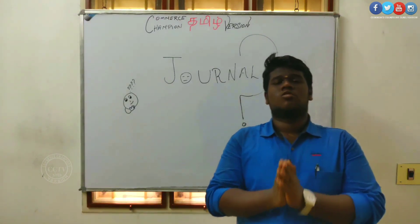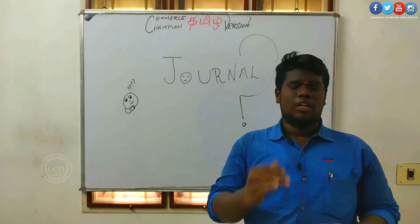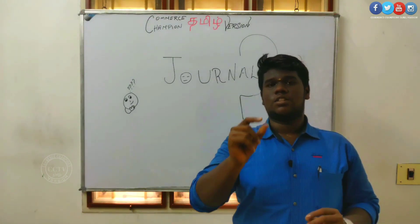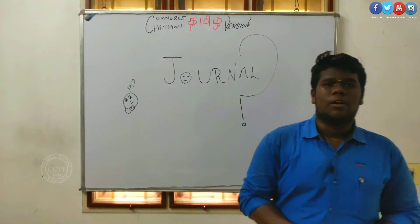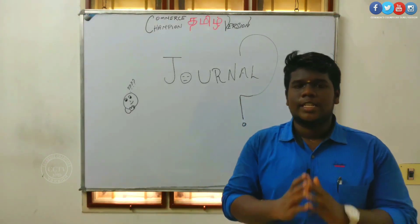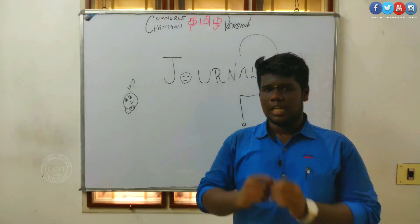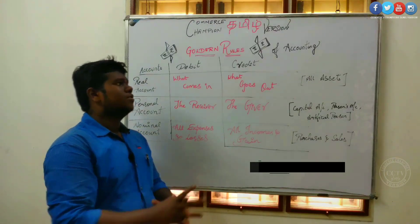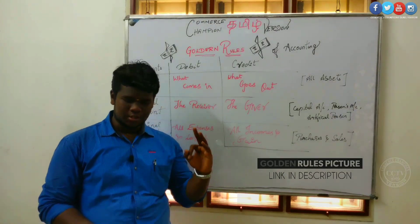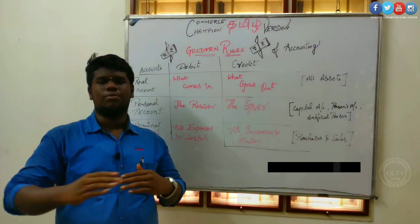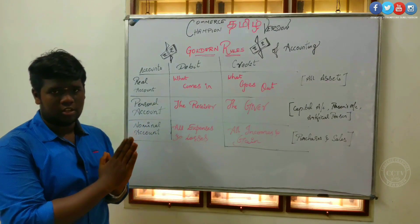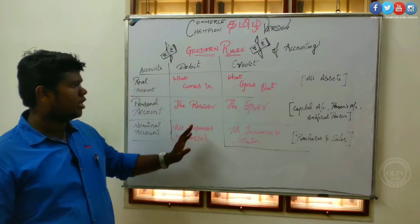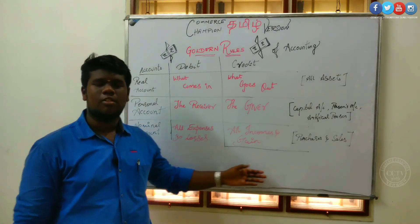If you want to enter the journal, this is the basic account. It is the art of recording. What is the meaning of the journal? Now let's talk about the golden rules. The golden rules — there are three accounts: Real accounts, Personal accounts, and Nominal accounts. These three accounts determine how long is debit and how long is credit.